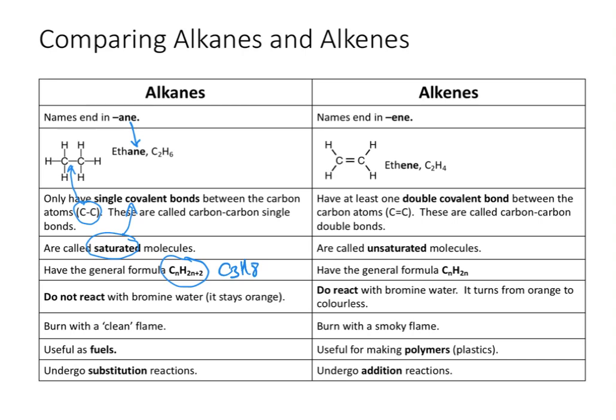Another key thing to note is that alkanes do not react with bromine water. Bromine water is an orange colour, and because no reaction happens between the alkane and the bromine water, the bromine water just stays orange. Another important thing is that alkanes burn with a clean flame, which makes them very useful as fuels — we don't get lots of thick smoke coming off them.